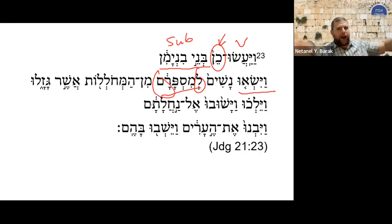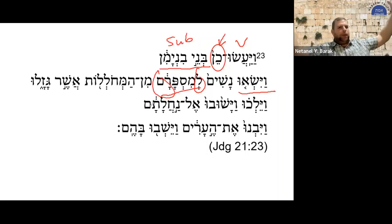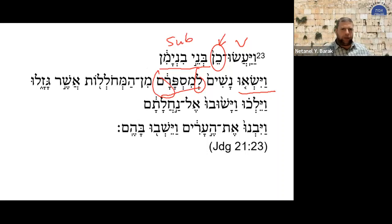So if you had 200 sons of Benjamin who did not have women, they married 200 women — not more than that. Now we are getting to the word mecholelot. So Georgie, what can you tell us about mecholelot?